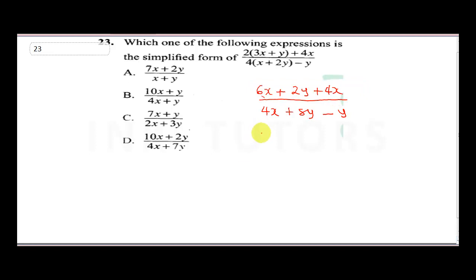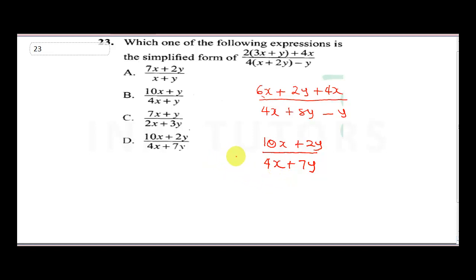Collecting like terms: 6x plus 4x gives 10x, plus 2y — all over 4x plus 8y minus y, which gives 7y. We can't simplify 4x plus 7y any further, so D is the correct answer.